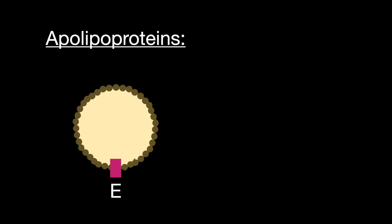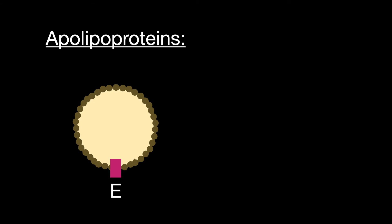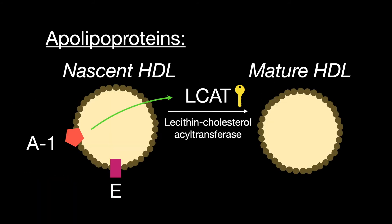Now let's go over the major apolipoproteins. Apolipoprotein E mediates remnant uptake into the liver and is found on everything except LDLs. Apolipoprotein A1 is found only on alpha-lipoproteins, also known as HDLs, and activates LCAT.